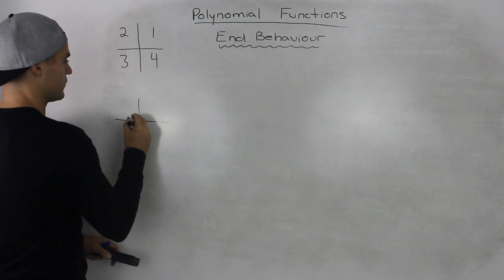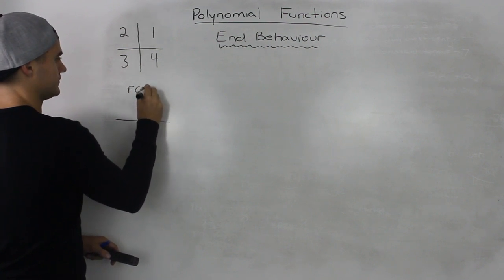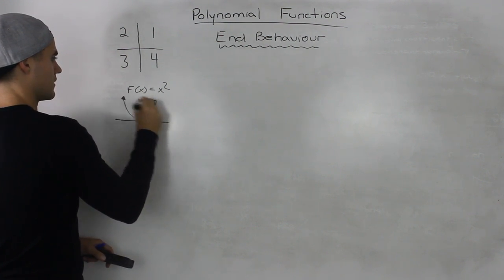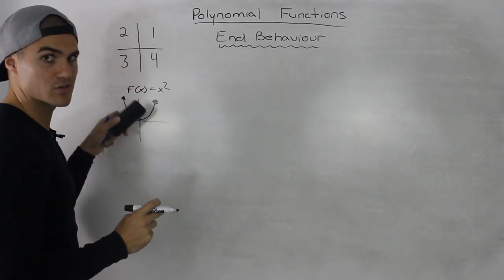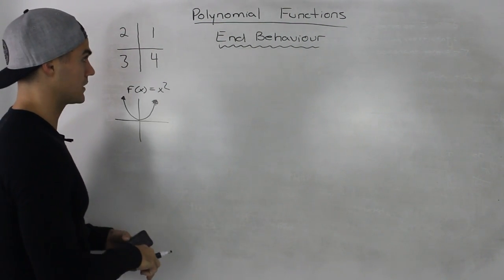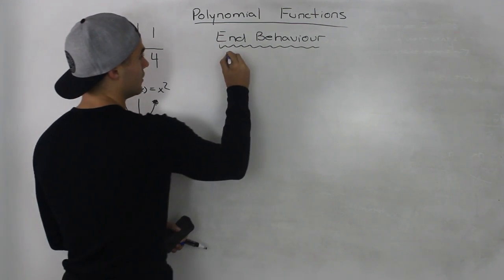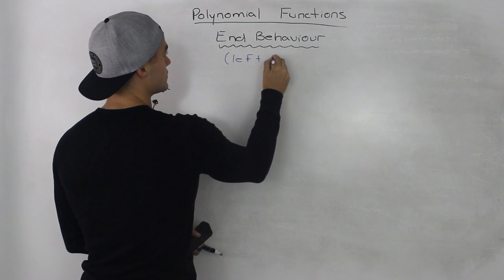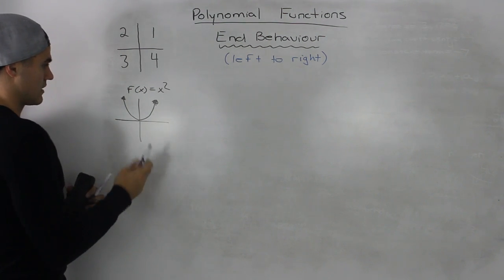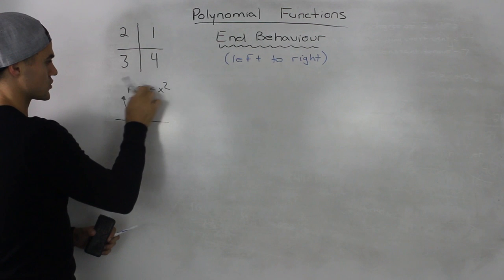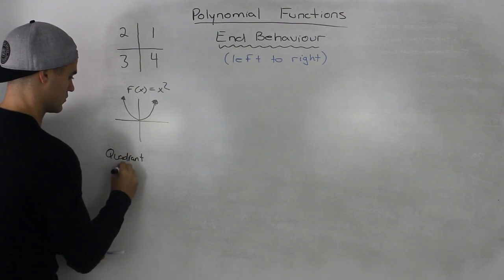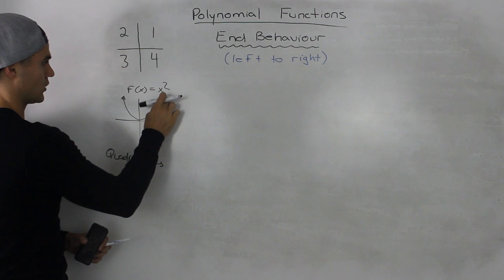For example, if we have the function x squared, which is just a parabola, if we were to describe the end behaviors of this parabola, what we would do is we would read always from left to right. Whenever you're describing end behavior, you want to remember: you read from left to right. Reading from left to right, this polynomial x squared starts in quadrant 2 and it ends in quadrant 1.